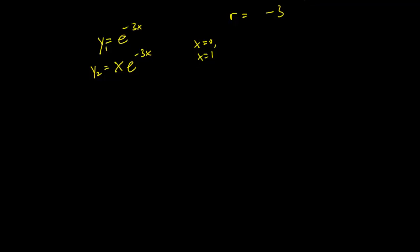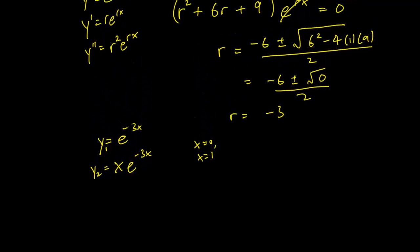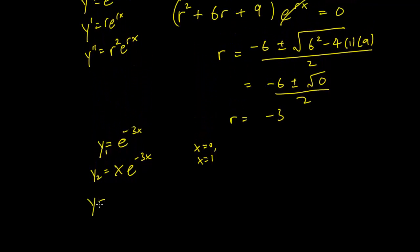You can just try the Wronskian if you want to do that instead. But now we have our general solution of y equals c1 e to the minus 3x plus c2 x e to the minus 3x. And it should be straightforward. If you have initial conditions you can figure out what c1 and c2 are. But anyway, this is our general solution.